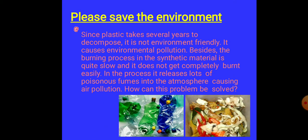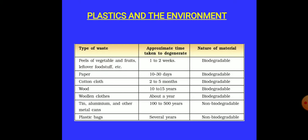Now plastic, please save the environment. Since plastic takes several years to decompose, it is not environment friendly. It causes environmental pollution. Besides, the burning process of synthetic material is quite slow and it does not get completely burnt easily. In the process, it releases lots of poisonous fumes into the atmosphere causing air pollution also. This table shows that peels of vegetables are biodegradable within one or two weeks, paper ten to thirty days, wood ten to fifteen days. But tin, aluminum, one hundred to five hundred. But plastic bags, it takes several years to degrade or may not be.